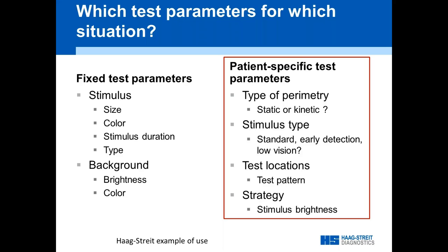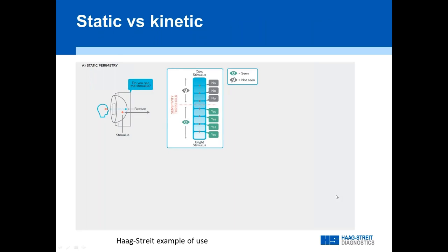Let's go through this. First is what kind of parameters should you use — static or kinetic. Second, what kind of stimulus type. Third, test locations — where should you test. And fourth, the strategy, which is really defining the stimulus brightness and the sequence of the brightnesses.